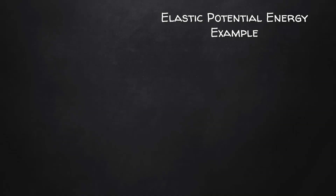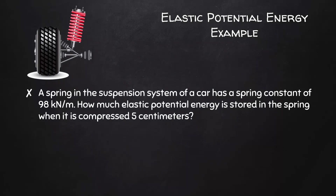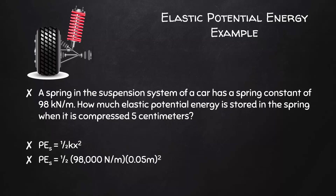And finally, an elastic potential energy example. The spring in the suspension system of a car has a spring constant of 98 kilonewtons per meter. How much elastic potential energy is stored in the spring when it is compressed 5 centimeters? The equation is one-half kx squared. Plugging in our given values, making sure to express them in units of newtons per meter and meters, the potential energy stored in the spring is 123 joules.